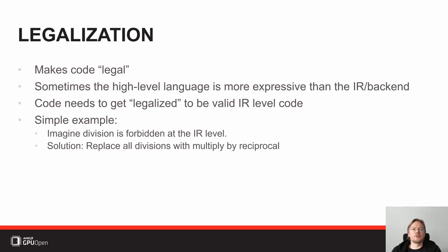We could force all high-level languages to remove divisions — so instead of writing A divided by B, you would write A times reciprocal B. That's clearly not very ergonomic, and one day there might be hardware which has divisions you'd want to take advantage of. So instead, this part is done in the front-end as part of the legalization step, where the front-end sees a division and replaces it with a multiply of the reciprocal.